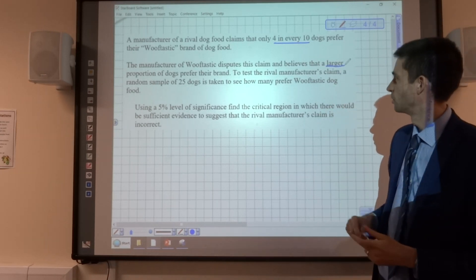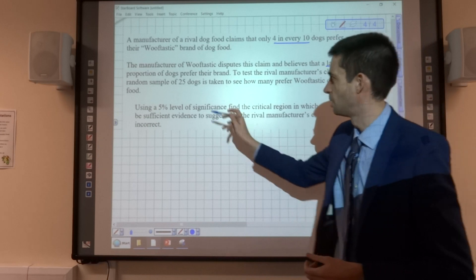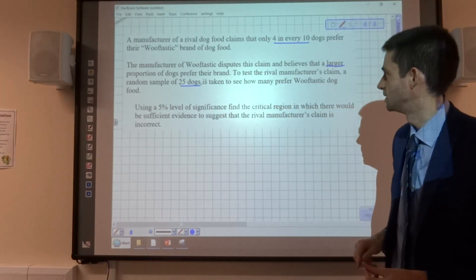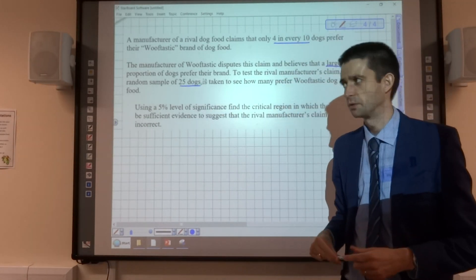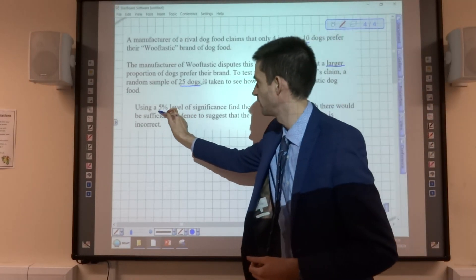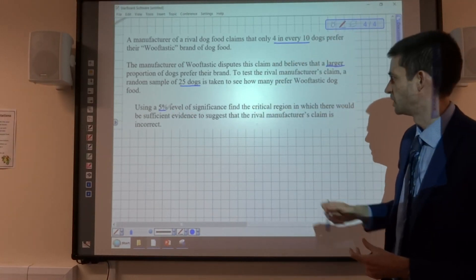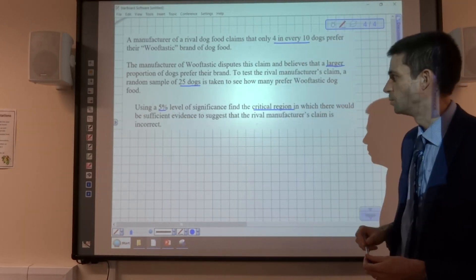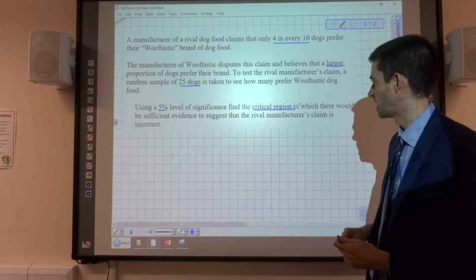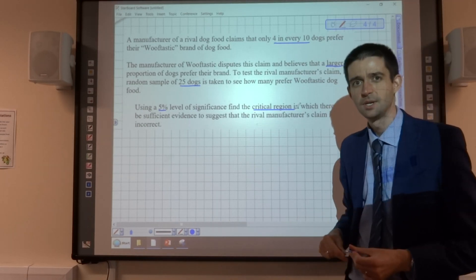To test the rival manufacturer's claim, a random sample of 25 dogs is taken to see how many prefer Woof-tastic dog food. Using a 5% level of significance, find the critical region in which there would be sufficient evidence to suggest that the rival manufacturer's claim is incorrect.